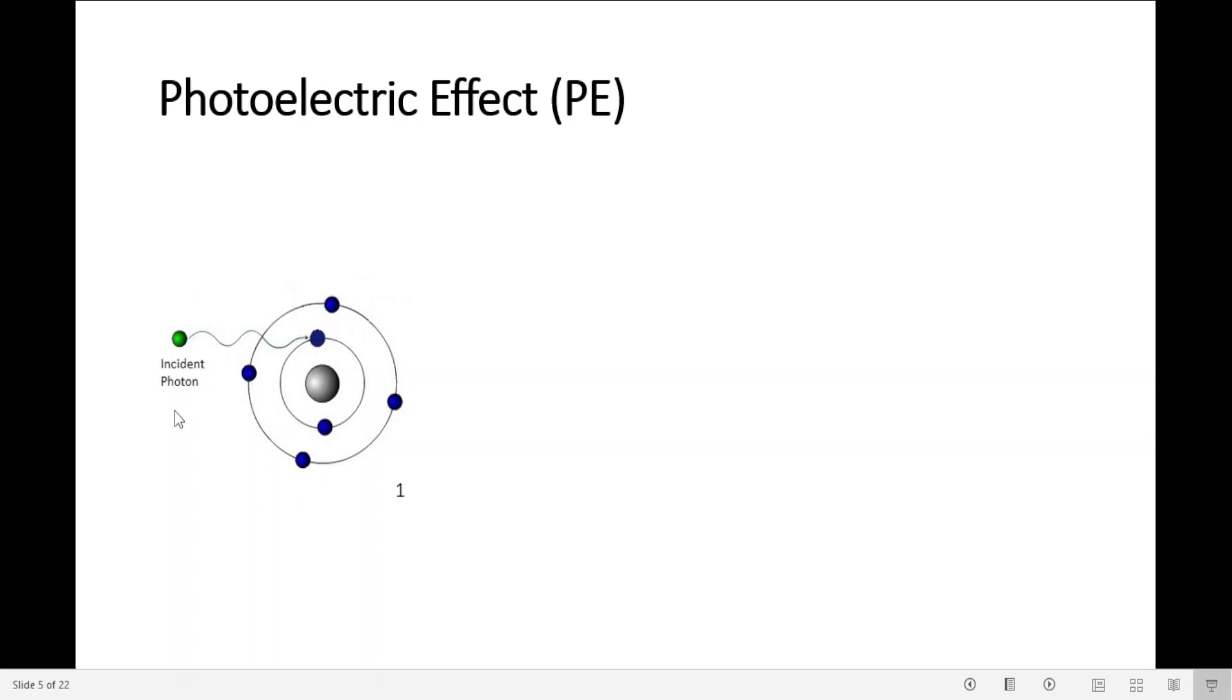So let's go step by step here. We have an incident photon coming, interacting with this orbital electron. The incident photon is completely absorbed in the process and the electron is ejected. We are going to have this space here now and this situation is unstable for that atom. When that happens, an electron from outer shell will move to fill that gap.